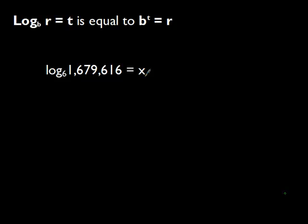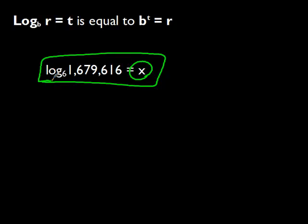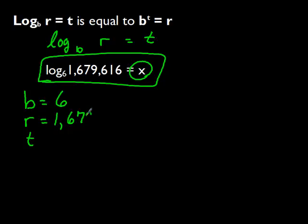In our next problem, we want to find out what this value of x stands for. We have this logarithm right here. We want to convert this into an exponent so we're able to find out what the value of x is. We have log base b of r equals t. We want to pull out what our values of b, r, and t are. b is the same as 6, r is the 1,679,616, and t is simply our value of x. We fill all this information in and turn it into an exponent.